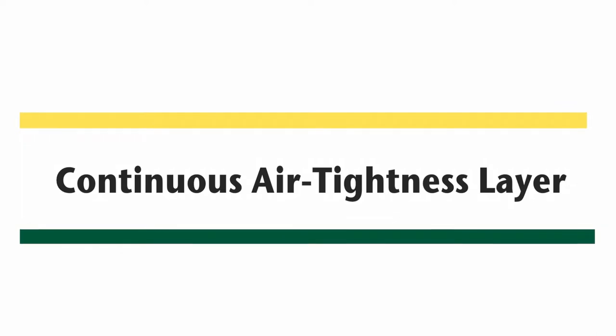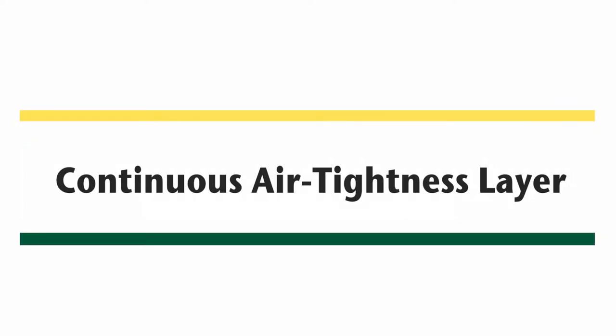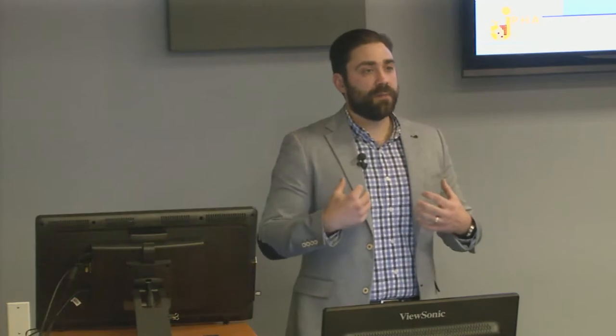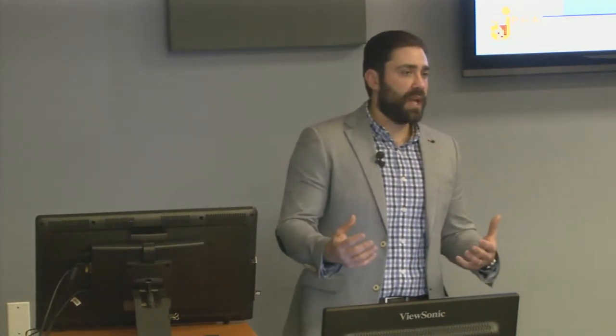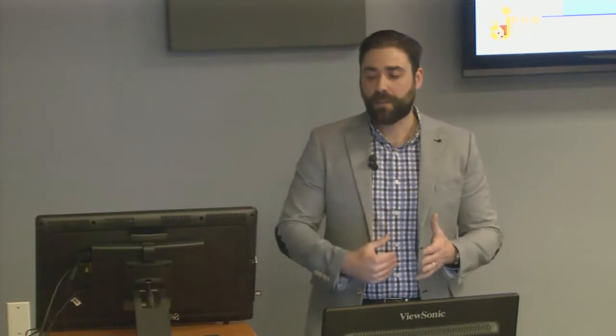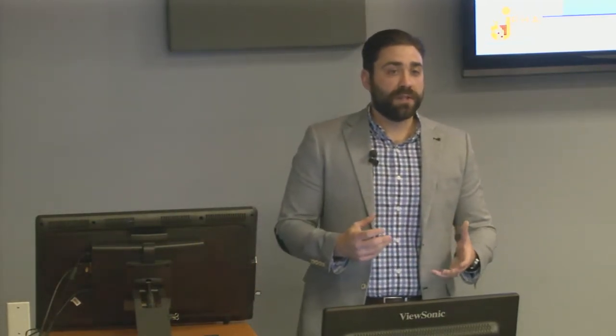We need to make sure that we have a continuous air tightness layer aligned with the thermal layer, so they work together to achieve the thermal performance. That air tightness layer is going to prevent conditioned air from escaping and prevent unconditioned air from the outside from entering. It will reduce drafts, reduce the possibility of moisture damage, and help with the thermal properties. What we're shooting for with the Passive House standard is 0.6 air changes per hour at 50 Pascals — a very high level of air tightness.